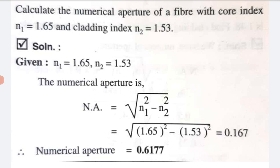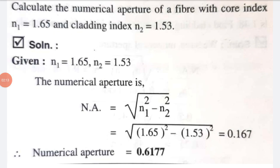Let's go to the second numerical: Calculate the numerical aperture of a fiber with core index N1 equal to 1.65 and cladding index N2 equal to 1.53. Given: N1 equals 1.65, N2 equals 1.53, and we have to find the numerical aperture. The formula is the square root of N1 squared minus N2 squared — square root of 1.65 squared minus 1.53 squared — and the value is equal to 0.167.